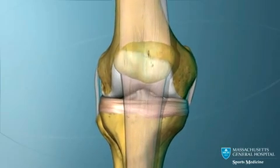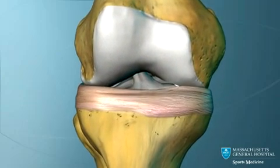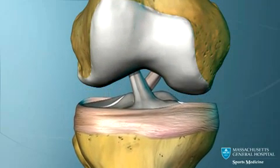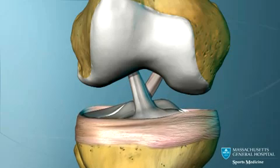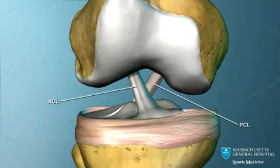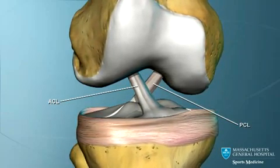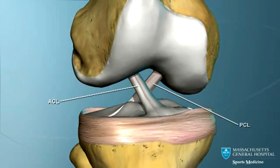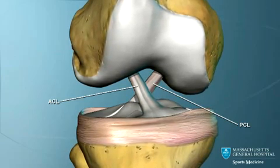Two ligaments cross in the center of the knee. They are called the cruciate ligaments. The ligament toward the front is the anterior cruciate ligament, or ACL, and the one towards the back is the posterior cruciate ligament.